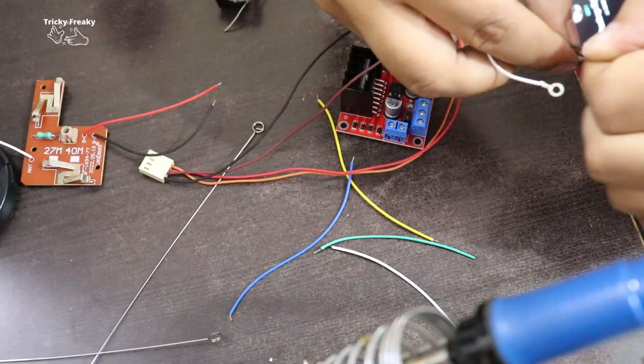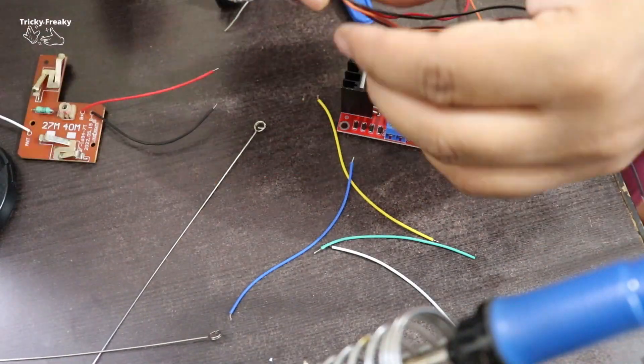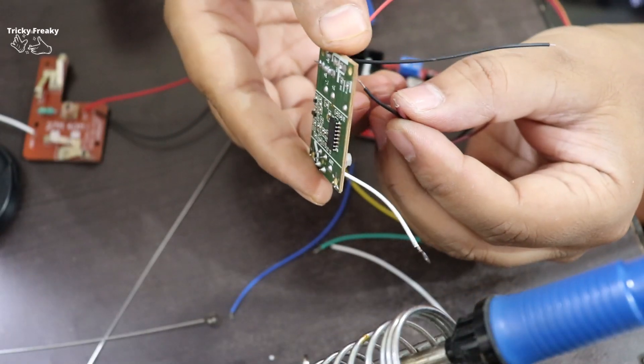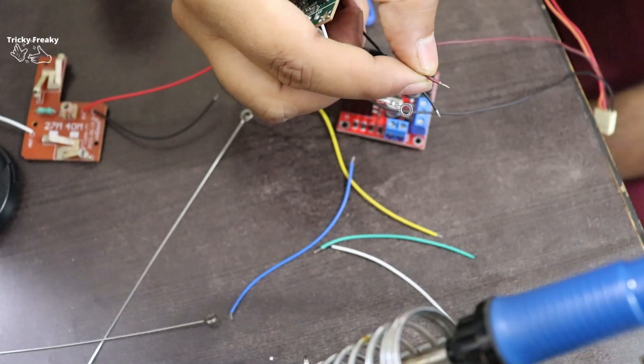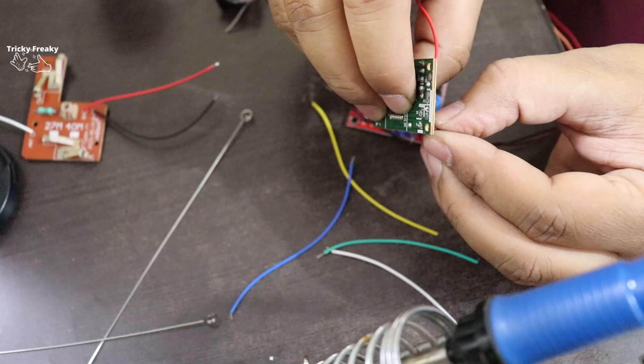And here I'll use a four pin connector, which I need to connect to the 298N. As I mentioned earlier, I'll attach the wires from this connector in place of the four motor wires.